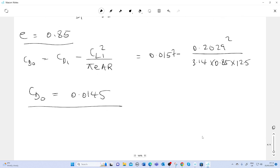So therefore our Oswald factor equals 0.85 and our CD0 equals 0.0145. Thank you for staying to the end.